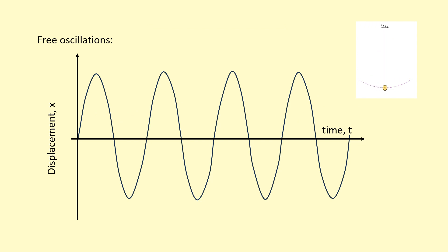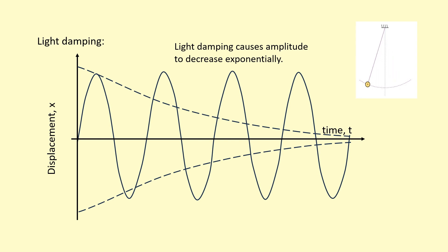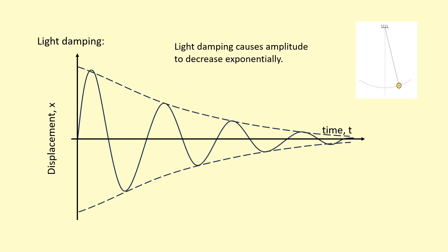This is the displacement-time graph of three oscillations with no air resistance or resistive forces. But when we add some light damping, meaning some small resistive forces, this is going to cause the amplitude to decrease exponentially. We're going to have to add an exponential function on top like this and define our oscillations within that function. The time period hasn't changed, it's just the amplitude that is decreasing over time.